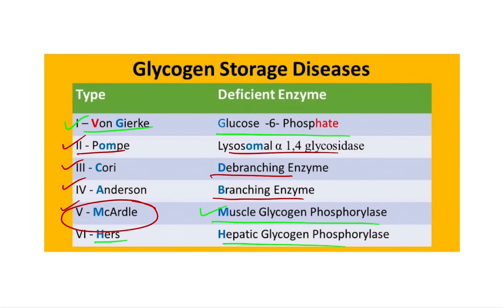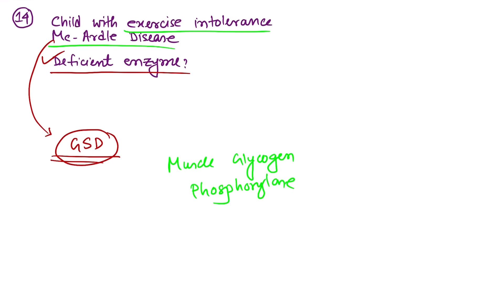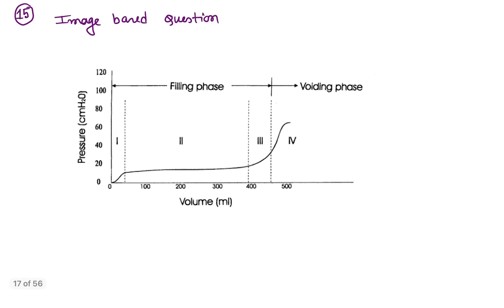In this case, the question was about McArdle disease, so the answer is muscle glycogen phosphorylase — the deficient enzyme in McArdle disease. The child presented with exercise intolerance and muscle pain. Question 15 was an image-based question from NEET 2020.